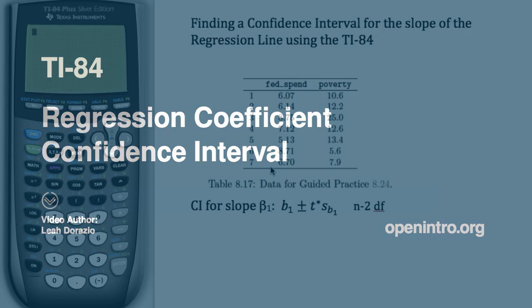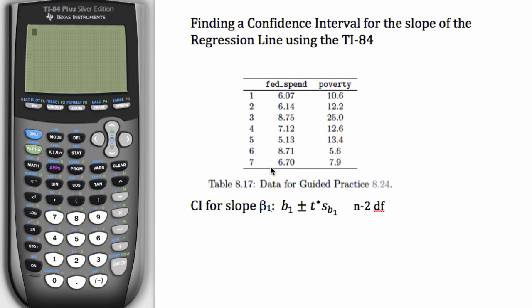The TI-83 doesn't have this function built into it, but that's okay, because in general for these problems, you'll be given B1 and its corresponding standard deviation in the regression output. So using those two numbers, along with the degrees of freedom to find T star, you can find the confidence interval without a calculator.